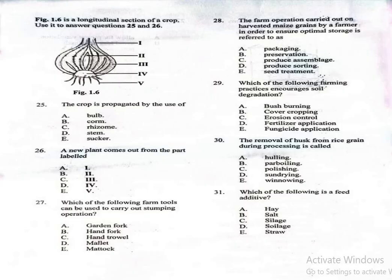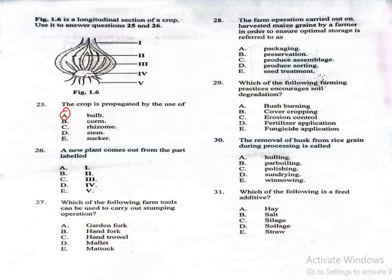Question 25 says, figure 1.6 is a longitudinal section of a crop. Use it to answer questions 25 and 26. Question 25. The crop is propagated by the use of: A. Bulb, B. Corm, C. Rhizome, D. Stem, E. Sucker. The correct answer is bulb, which is A. The figure shows a bulb, which is a modified underground stem used for vegetative propagation in crops like onions and garlic.